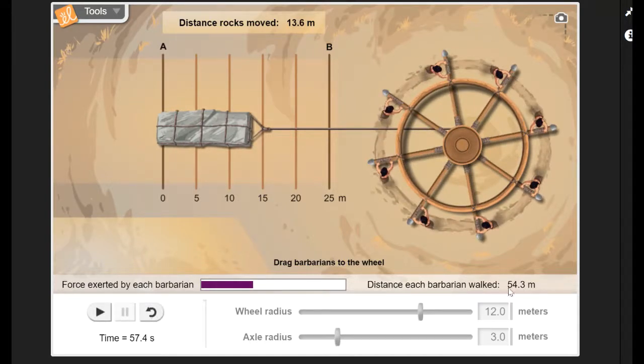It does keep track of the distance that it was moved, and then the distance that was moved over here. Right, this is how much each barbarian has walked. This is how far this thing has been dragged across the surface. What else can you do? You can take the wheel radius and you can change it. Right now it's on 12 meters, but you can make the radius bigger or smaller like that.